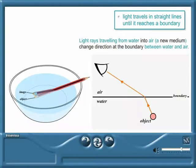The pencil appears to be bent because the light rays changed direction when they reached the boundary between water and air. Your brain doesn't know that the light ray changed direction at the boundary. It assumes that the ray travelled in a straight line and so interprets the image to be in a position above the actual object.